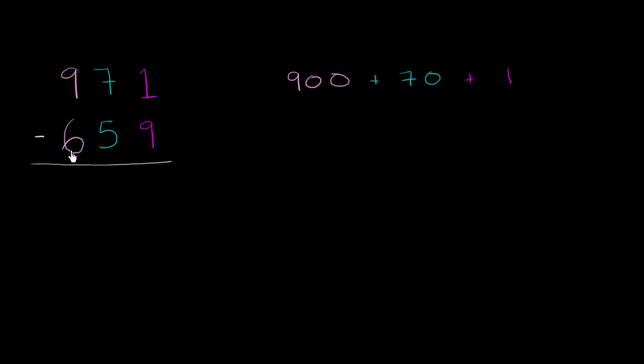And then down here, this 6 represents 600. This 5 represents 5 tens, or 50. And then this 9, well, it still just represents 9 ones, or 9. And we're subtracting this. We're subtracting 600 plus 50 plus 9. Or another way of thinking about it, we're subtracting 600, we're subtracting 50, we are subtracting 9.